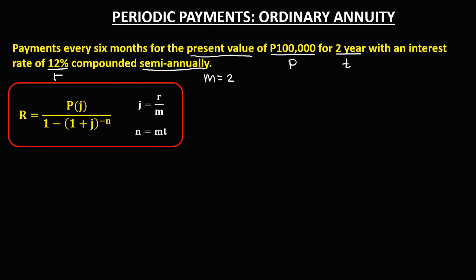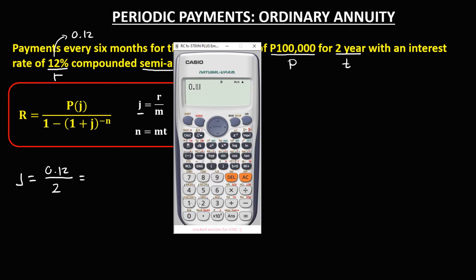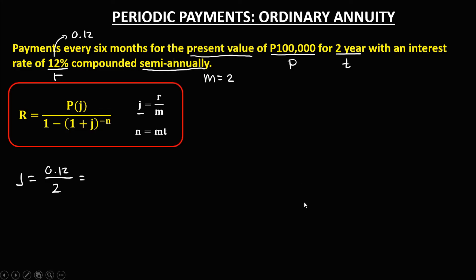First, we need to find the interest rate per period, that's J, equals R over M. With 12% in decimal that's 0.12, divided by M which is 2, equals 0.06. And to solve for the number of payments, that's M times the time — M is 2, and the time is 2 — so the number of payments is equal to 4.